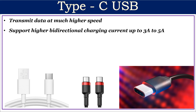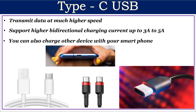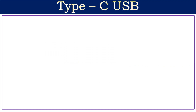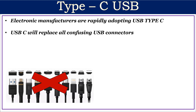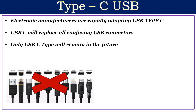Type C USB also supports high bi-directional charging current up to 5 amperes. That means not only can you charge your smartphone, but you can also charge other devices with your smartphone. Most electronic manufacturers are rapidly adopting USB Type C, and it is expected to replace all the confusing USB connectors in the future.